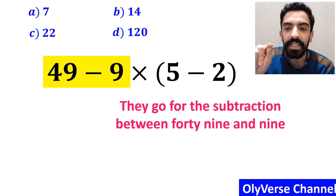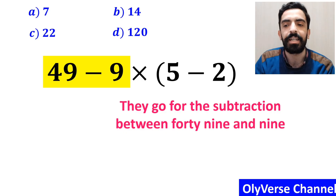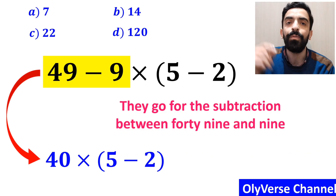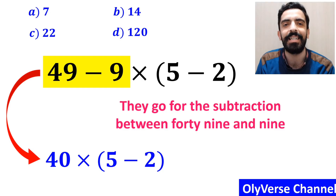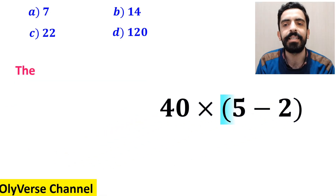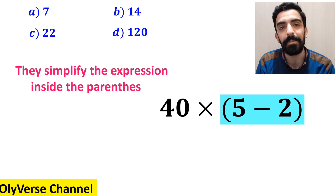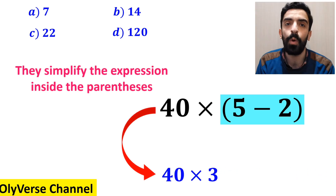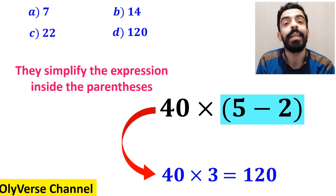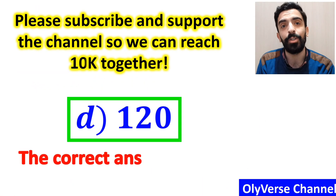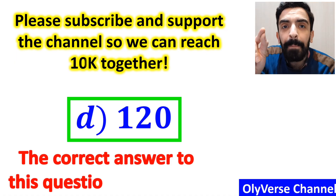In the next step, they go for the subtraction between 49 and 9, which I've highlighted in yellow, and instead of this expression they write 40 multiplied by (5 minus 2). In the final step, they simplify the expression in parenthesis and replace it with 40 multiplied by 3, which finally gives them the answer 120. They quickly say that the correct answer is option D.